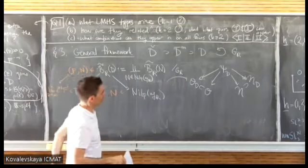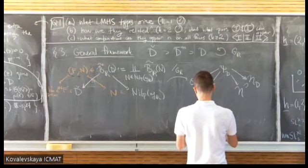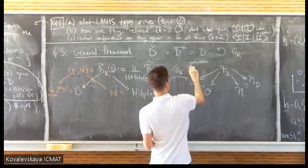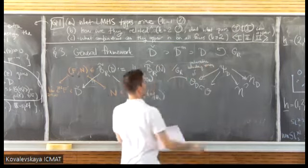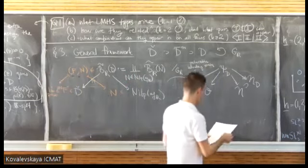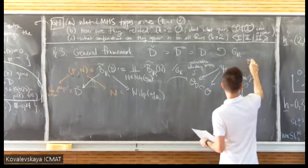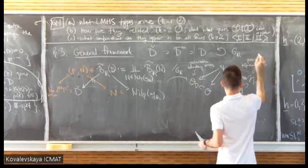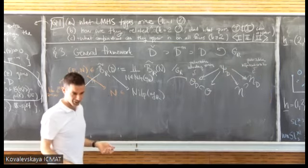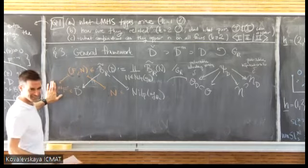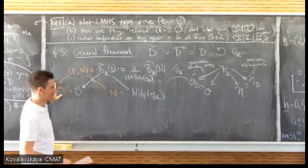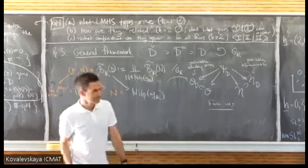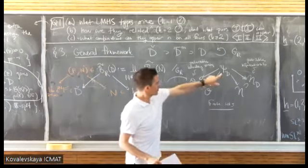These are all finite sets. Lie theorists know how to compute the number of orbits of G_R in D-check. This set O will contain D itself as one element, and then orbits in the boundary of D inside D-check. So this is some finite set. Might the map Psi_LIM be a bijection, allowing us to completely classify nilpotent orbits? The answer turns out to be yes — that's the first theorem in my paper with Carlstein and Robles.